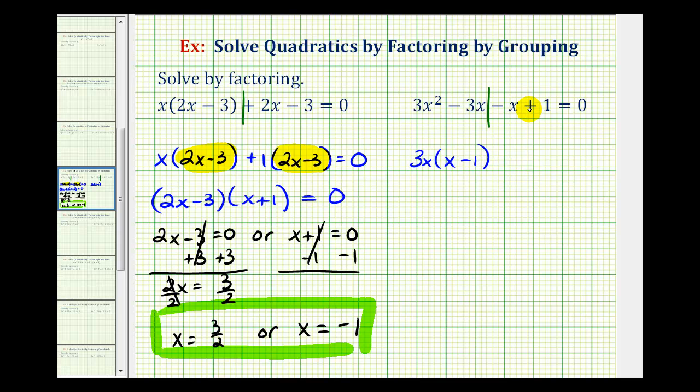Now looking at the right side, notice how negative x and positive 1 don't have any common factors other than 1. But if we factor out 1, notice how we'd be left with the factor of negative x plus 1 and we want positive x minus 1. So in this case, if we factor out negative 1, it would change the sign of these two terms. We would now have x minus 1.